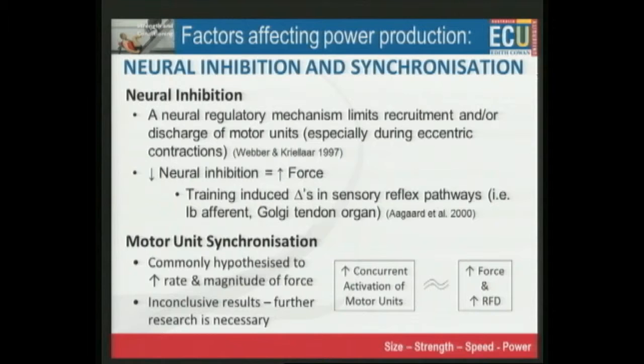Neural inhibition. Tied into all this, our system has anti-lock braking, it has dynamic stability control, and it has a rev limiter. The human body has all of these protective systems as well.